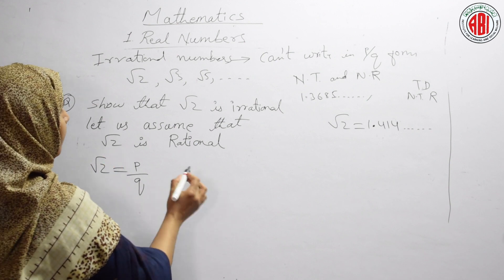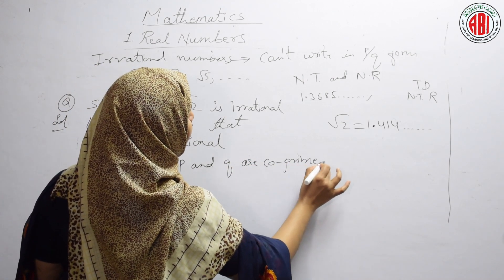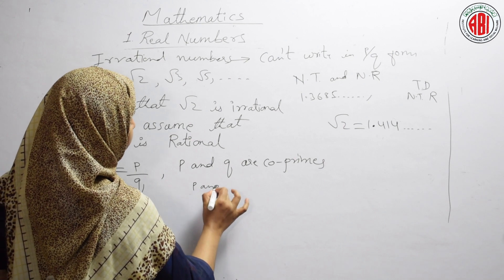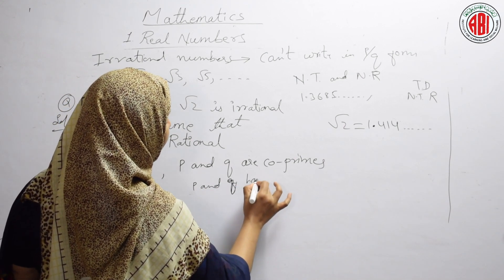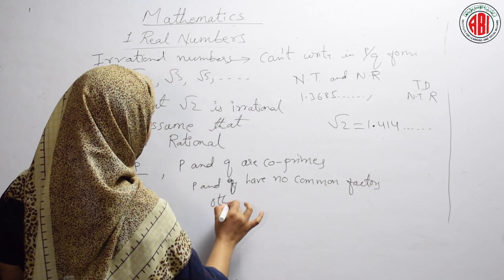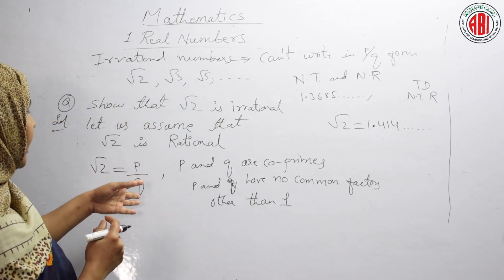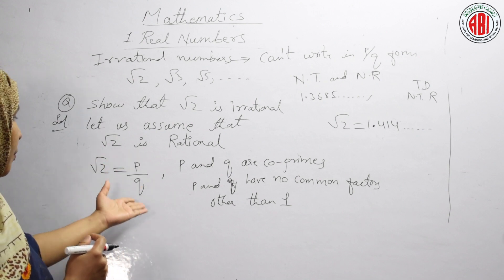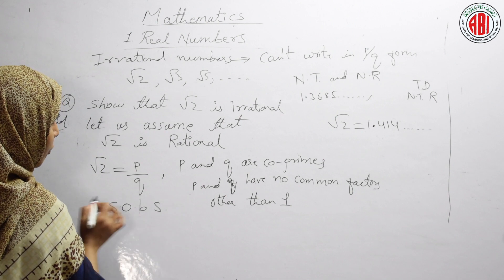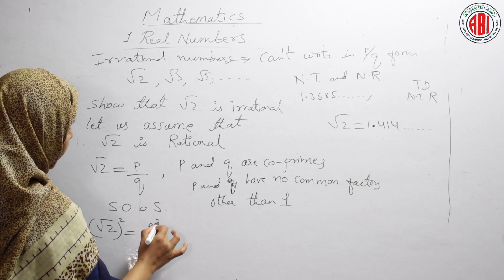Now, P and Q are co-primes, meaning they have no common factors other than 1. We have assumed root 2 is rational and written √2 = P/Q. Next, applying square on both sides: (√2)² = P²/Q². Here square and root cancel, giving 2 = P²/Q². Shifting Q², we get 2Q² = P².